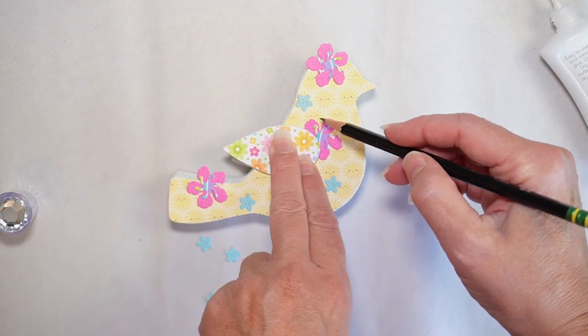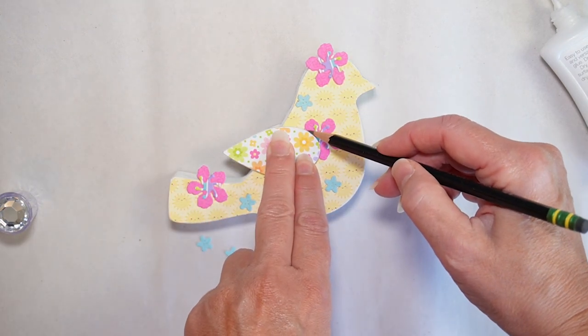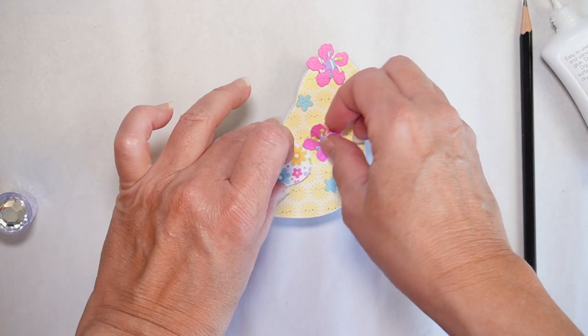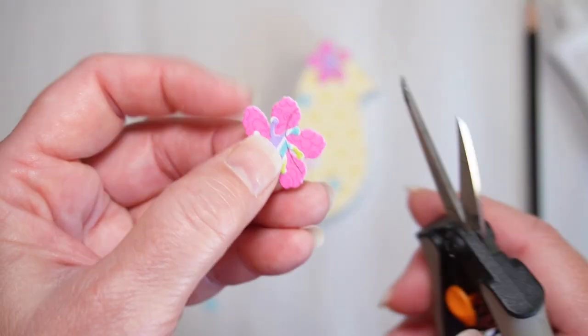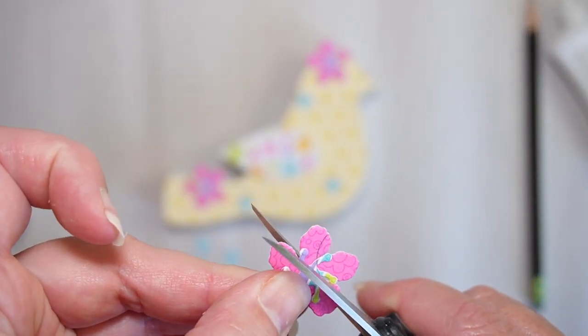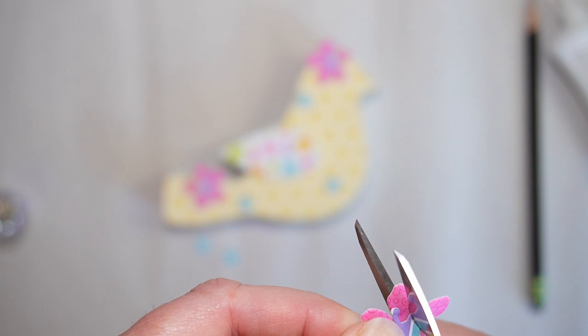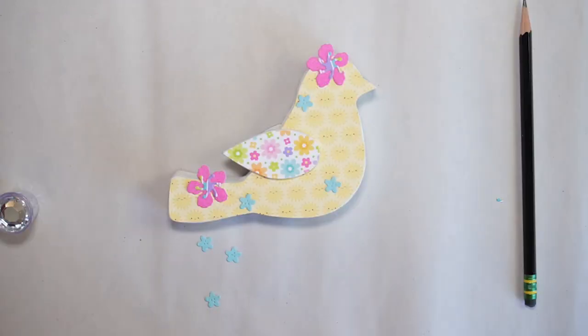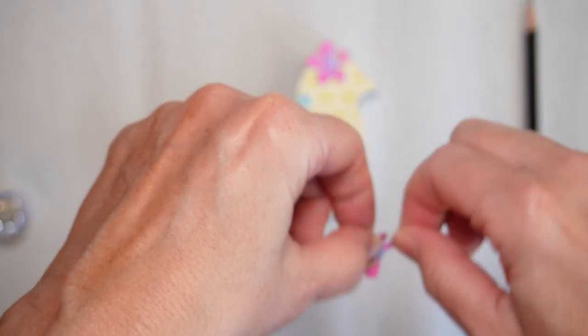Okay, now I realize that I want only part of this flower to show, so I'm just going to trace and cut that part out. I love these Fiskars spring-loaded scissors because they make it real easy on my hands.